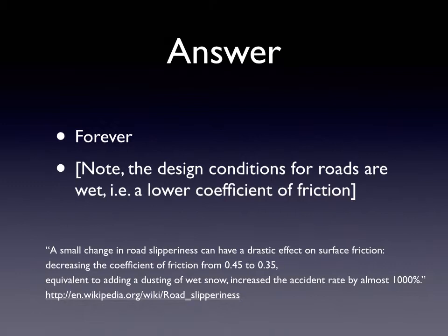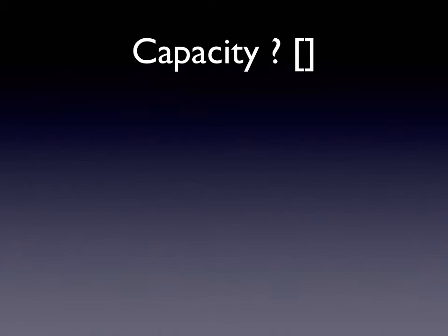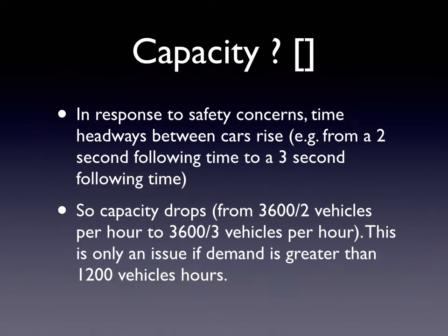So it's affecting safety. And because it's affecting safety, drivers respond by giving up more space. They have a larger gap or headway between the vehicle in front of them and themselves. So what's the effect on capacity? The capacity diminishes. If we're going from a 2 second following time, which is a bit conservative on freeways, vehicles are following at less than 2 seconds, so they're not using the 2 second rule that you learn in driver's ed. But if they increase to a 3 second following time, the capacity drops from 1800 vehicles an hour to 1200 vehicles per hour.